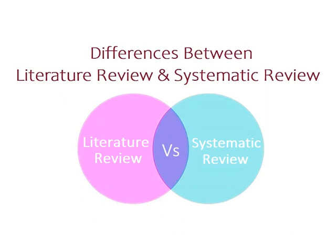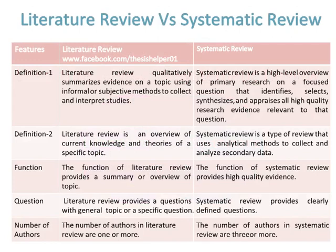Differences between Literature Review and Systematic Review. Definition 1: A Literature Review qualitatively summarizes evidence on a topic using informal or subjective methods to collect and interpret studies, while a Systematic Review is a high-level overview of primary research on a focused question that identifies, selects, synthesizes, and appraises all high-quality research evidence relevant to that question.